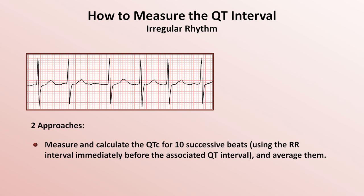Next, how should the U-wave impact QT measurement? If the U-wave is distinct from the T-wave and much smaller in size, most cardiologists do not include it in the measurement of the QT interval. However, some cardiologists will include it if the U-wave amplitude is greater than 50% that of the T-wave, but it's not known if this is appropriate. It's important to not confuse a small U-wave with unusual T-wave morphologies that are seen in some subtypes of congenital long QT syndrome.